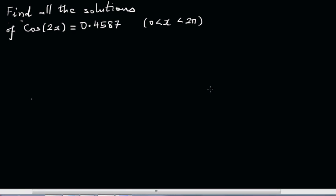Find all the solutions of cos(2x) equals 0.4587 between 0 to 2π. It's a good idea to first do it algebraically and then we'll check it on a graphic calculator.